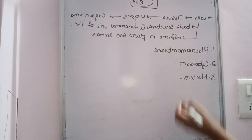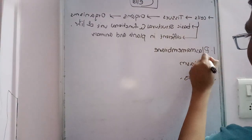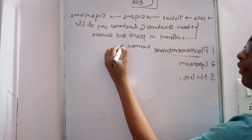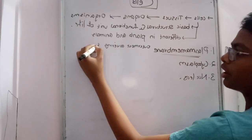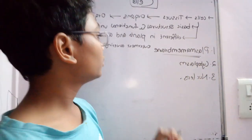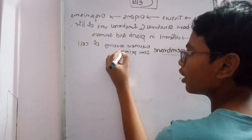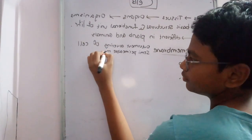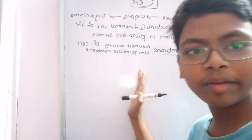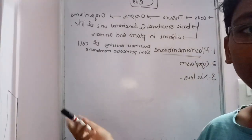The first main part is the plasma membrane. It is the outermost covering of the cell. In the case of plants, the outermost covering will be the cell wall. The plasma membrane is also called the cell membrane, and it is also called the semi-permeable membrane.